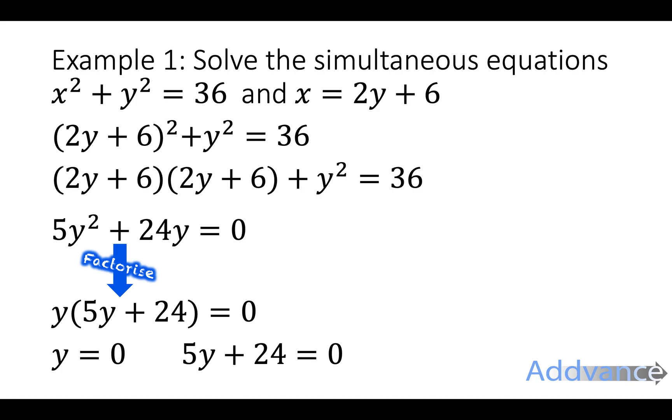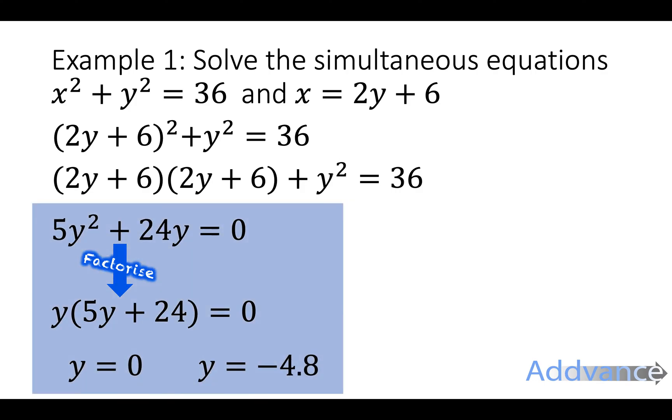And so we rearrange the second equation 5y plus 24. We take 24 to the other side and then divide by 5. And we'll get y is minus 4.8. This bit in blue here is just solving a quadratic. And if you prefer you can use a quadratic formula to do that or some other way of solving quadratics. But I normally just factorise. If the numbers are too scary then probably better to use a quadratic formula.